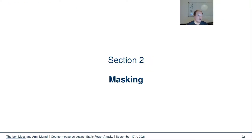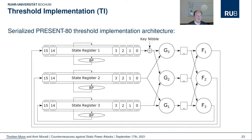We have also considered a masking scheme to combine with the hiding countermeasures. We chose a simple threshold implementation of the serialized PRESENT-80 cipher, which uses three shares and a decomposed S-box to offer first-order side-channel security.